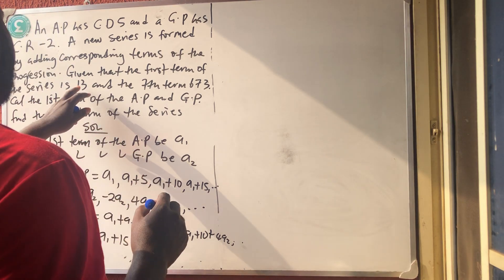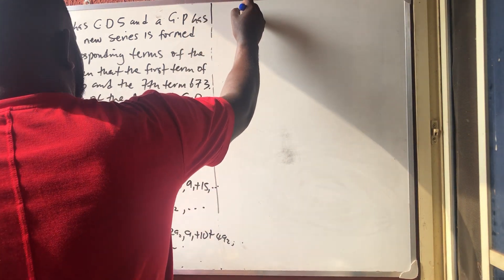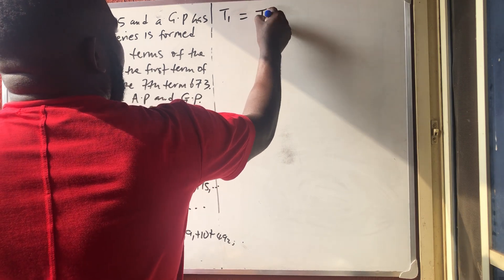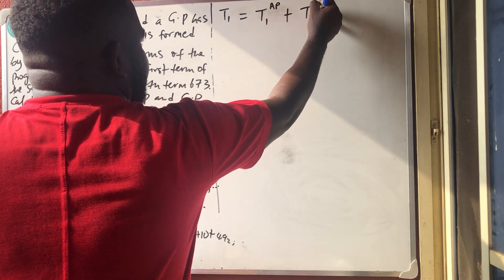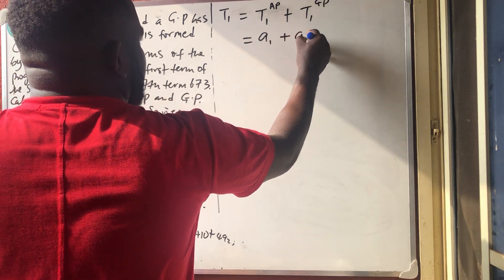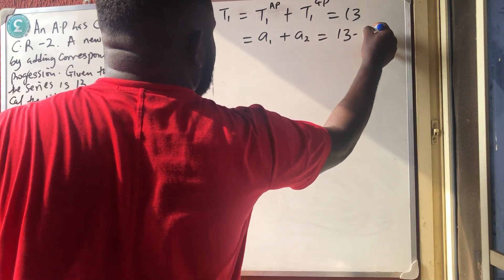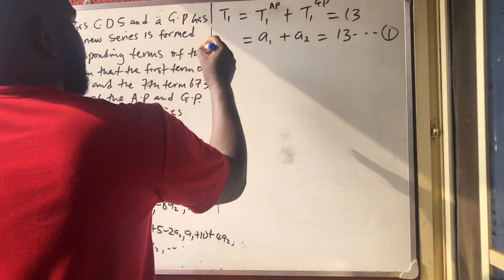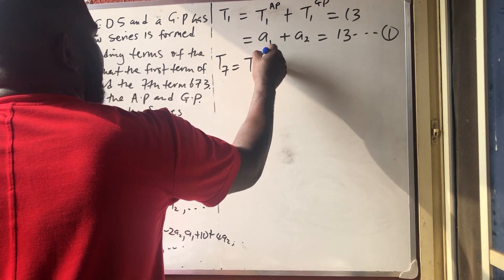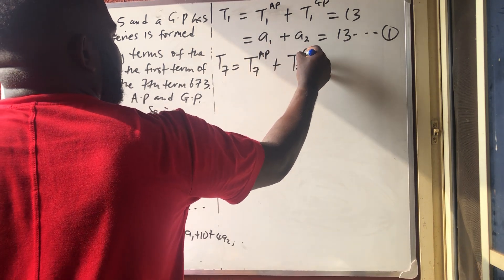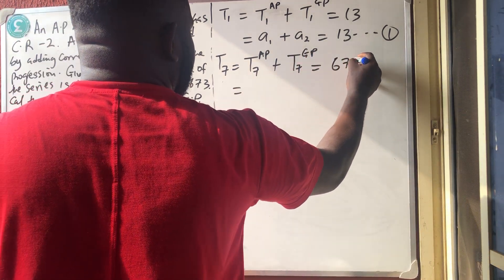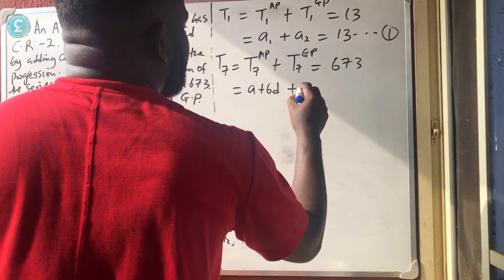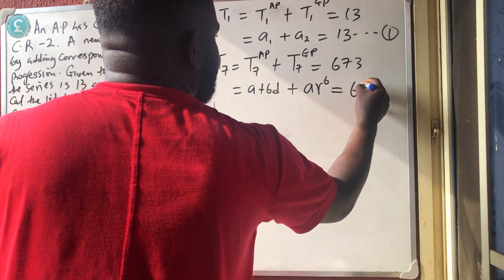They told us the first term of this new series is 13. So T1 of the AP plus T1 of the GP gives us A1 plus A2 equals 13 — equation 1. The seventh term is 673. So the seventh term of the AP plus the seventh term of the GP: using A plus 6D for the AP and AR to the power 6 for the GP, this equals 673. Substituting D equals 5 and R equals minus 2: A1 plus 6 times 5 plus A2 times minus 2 to the power 6 equals 673.